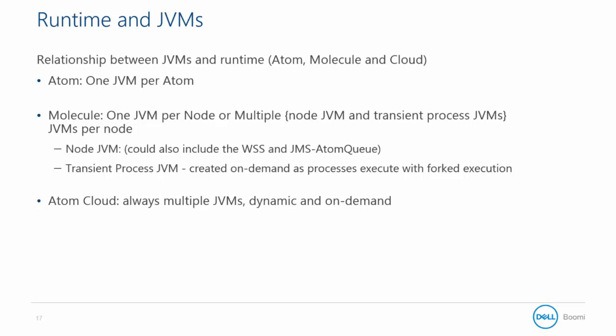A molecule has a single JVM per node on the cluster by default. A molecule can be configured with forked execution, in which case there can be multiple JVMs per node, which is similar to a cloud. These additional JVMs are transient — they are spun up on execution requests and returned to memory when the execution finishes. The NodeJVM, on the other hand, always persists to keep that node running.